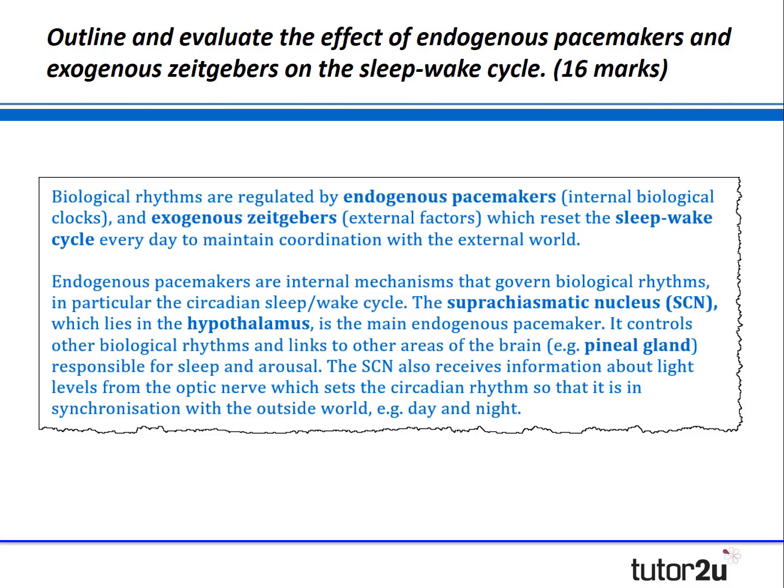Endogenous pacemakers are internal mechanisms that govern biological rhythms, in particular the sleep-wake cycle. The suprachiasmatic nuclei, which lies in the hypothalamus, is the main endogenous pacemaker and it controls other biological rhythms and is linked to other areas of the brain, for example the pineal gland, which is responsible for sleep and arousal. The SCN also receives information about light levels from the optic nerve, which sets the circadian rhythm so that it is in synchronisation with the outside world, for example day and night.